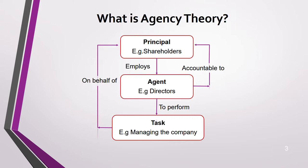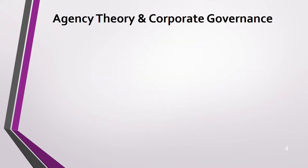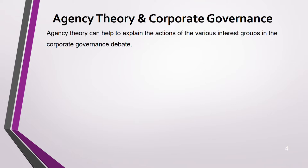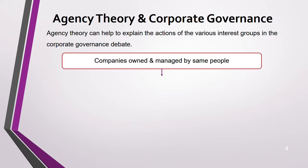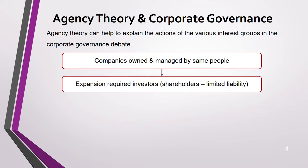Agency theory is linked to corporate governance. It helps you understand why various parties take the actions they do — why an employee or director behaves in a certain way. When a company is owned and managed by the same person, there's no conflict. But once ownership and management are separated, agency theory becomes relevant.